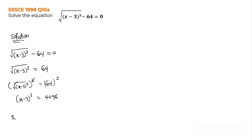So if I do that I have cubic root of (x minus 3) cubed equals the cubic root of 4096. So this cube will cancel the cubic root. The cubic root of 4096 will give me 16 as my answer. So all I have left is x minus 3 equals 16.